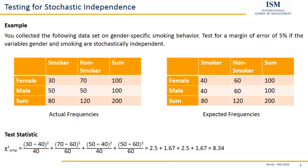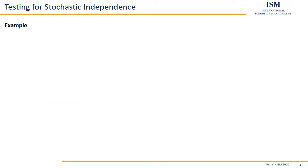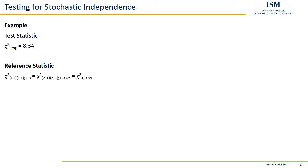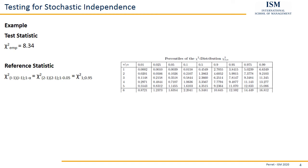For the reference statistic, we need chi-squared with (I−1)(J−1) degrees of freedom and 1−alpha. We have a table with two columns and two rows, so I and J are both two, giving us one times one — one degree of freedom. And 1 − 0.05 = 0.95. Turning to our table, with one degree of freedom and the 0.95 column, we get a reference statistic of 3.8415.